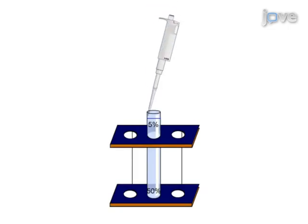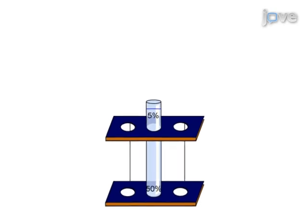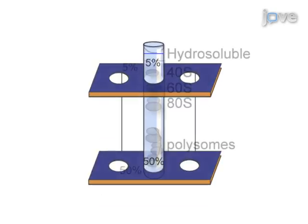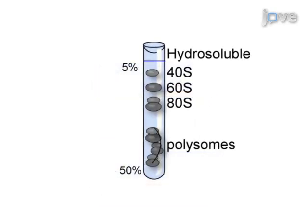As a second step, ribosomes are extracted from cells and separated based on their density by sucrose density gradient centrifugation to quantify and isolate free ribosomal subunits 40S and 60S, monosomes 80S, and translating ribosomes, polysomes.